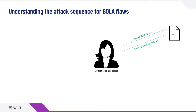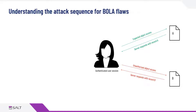What happens with BOLA exploitation is that an attacker has compromised that authenticated user session, or maybe it's just a malicious user in the case of something like an insider threat. I'm actually going to manipulate the request and now try to access a different piece of data or object — in this case, record B. And the server, unfortunately, is not verifying authorization levels correctly. The server responds with that record, kind of unaware that this user might not be authorized to that piece of data. That's BOLA in its most simple explanation.